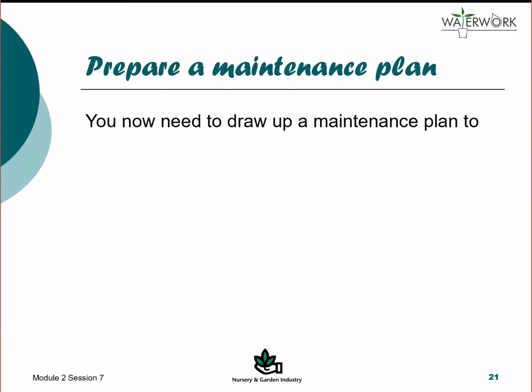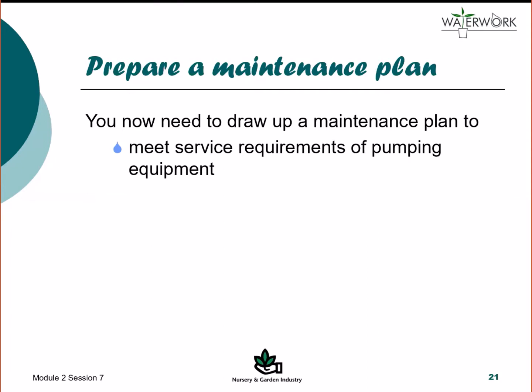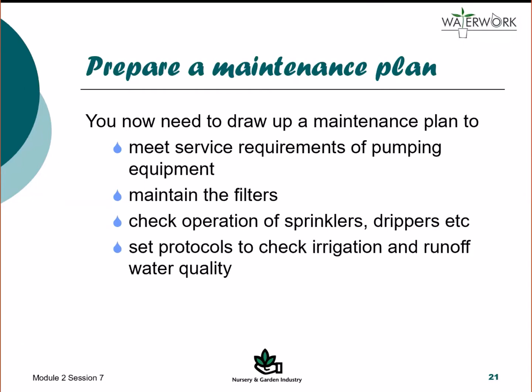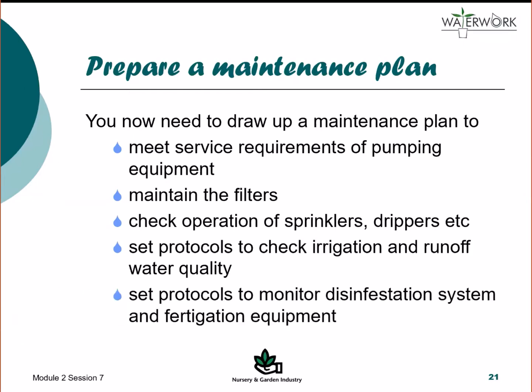The nursery owner and production staff, with assistance from the irrigation supplier and designer, should develop a maintenance plan for the care and ongoing operation of the system. The maintenance plan should detail the service requirements of the pumping equipment, filters and valves in accordance with manufacturer's recommendations, and the schedule for checking operation of sprinklers for both discharge and pressure. It should also include protocols to check water quality of irrigation and runoff water, fertiliser concentration and leachate volume, the disinfestation system operation and chemical use, and fertigation system performance and fertiliser concentrations.